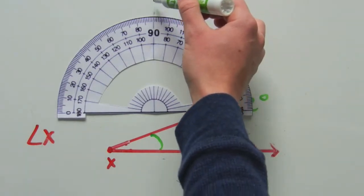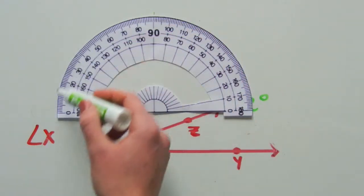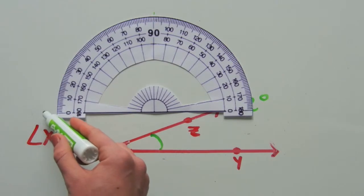One quarter of the circle was 90 and half of the circle was 180 out of 360, which represented 180 degrees.